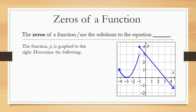The zeros of a function. The zeros of a function, f, are the solutions to the equation f(x) equals zero. So in other words, they're all of the x values that make the equation equal zero, or all of the x values that have a corresponding y value of zero.